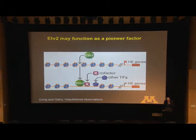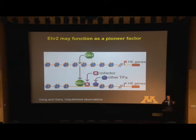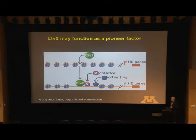Over the past year, we've spent a tremendous amount of time looking at the role of ETV2 as a pioneer factor, as John Cook had emphasized regarding epigenetic regulation. We've shown that ETV2 can bind to nucleosomal DNA, relax the chromatin, and allow very early upstream regulators important in specification of various lineages to bind. This emphasizes that ETV2 is not just a master regulator, but also a pioneer factor.